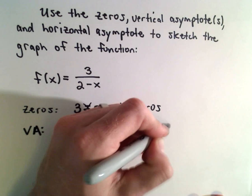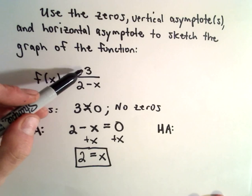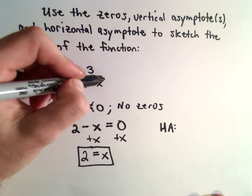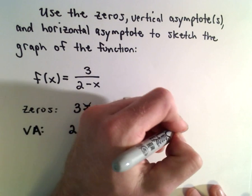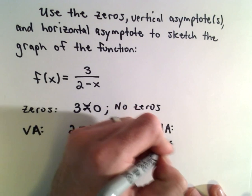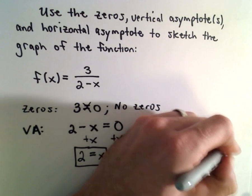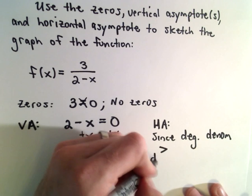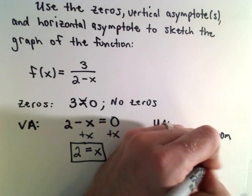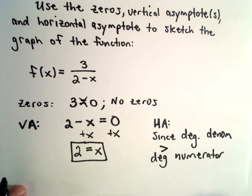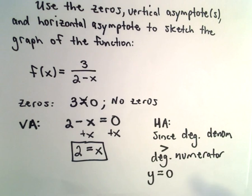And to get the horizontal asymptote, notice the degree of the numerator is 0, it's just a constant. The degree of the denominator is 1 because we have negative x to the first power. So since the degree of the denominator is greater than the degree of the numerator, that tells us y equals 0 is going to be our horizontal asymptote.